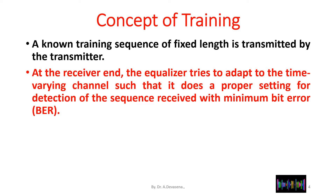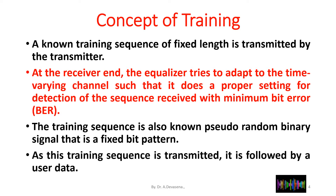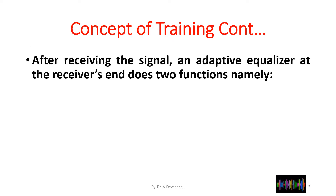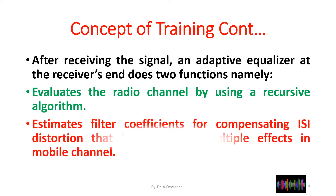The equalizer adapts to achieve detection with minimum bit error rate (BER). The training sequence is also known as a pseudo-random binary signal — a fixed bit pattern. After this training sequence, it is followed by user data. Upon receiving the signal, the adaptive equalizer at the receiver's end evaluates the radio channel using a recursive algorithm.